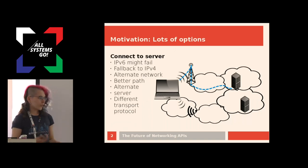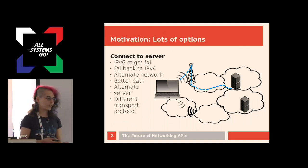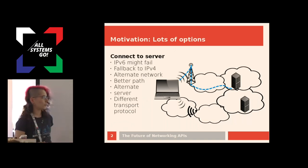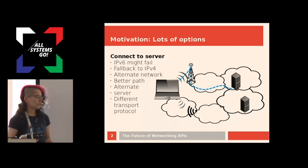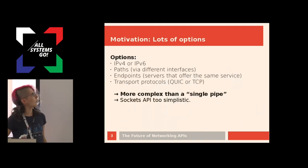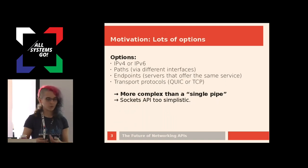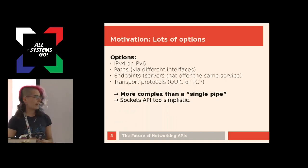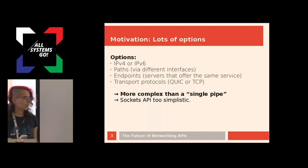But again, with the socket API, because the socket API provides a very basic abstraction, our application would have to do all this by itself, or some library within the networking stack of the operating system. The point is that for all these different options, there's just a lot of choice and it's getting more complex. Applications are not always benefiting from all this diversity of different paths, different endpoints, different transport protocols, IPv4 versus v6, fallback handling. Networking is more complex than just opening a single bit pipe to some endpoint that we know.